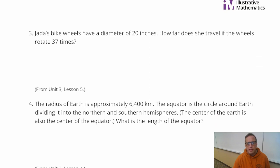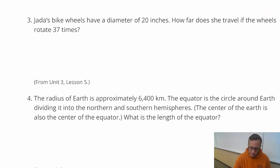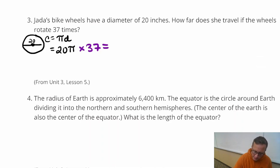Number three. Jada's bike wheel, her wheels have a diameter of 20 inches. How far does she travel if the wheels rotate 37 times? All right, so this is asking circumference, some derivation of circumference. And so the diameter of the wheel is 20, and circumference equals pi times diameter. And the diameter is 20. So I'm just going to keep this in terms of pi. I'm going to say that the circumference of the wheel is 20 pi. And then her wheel turns 37 times. So we could just do 20 times 37, which is 74.